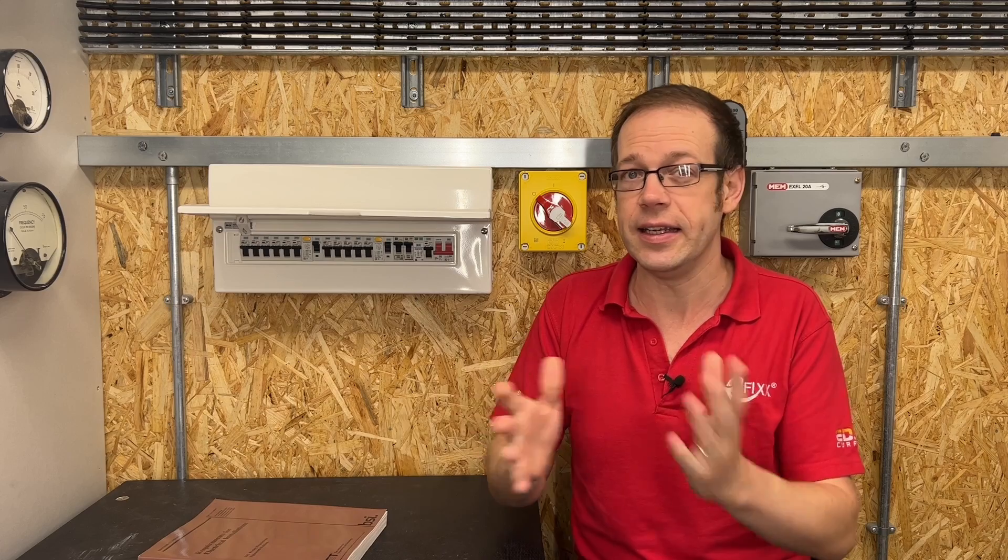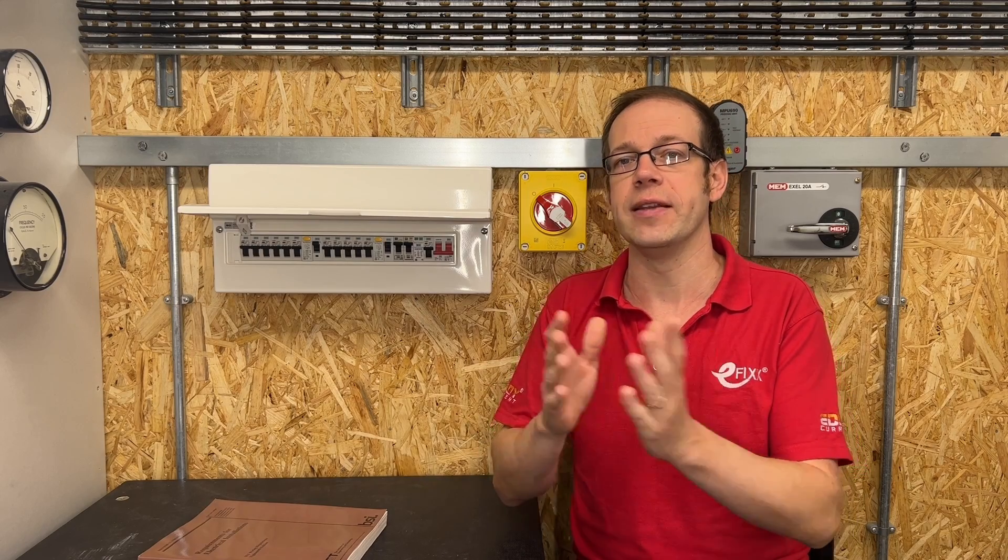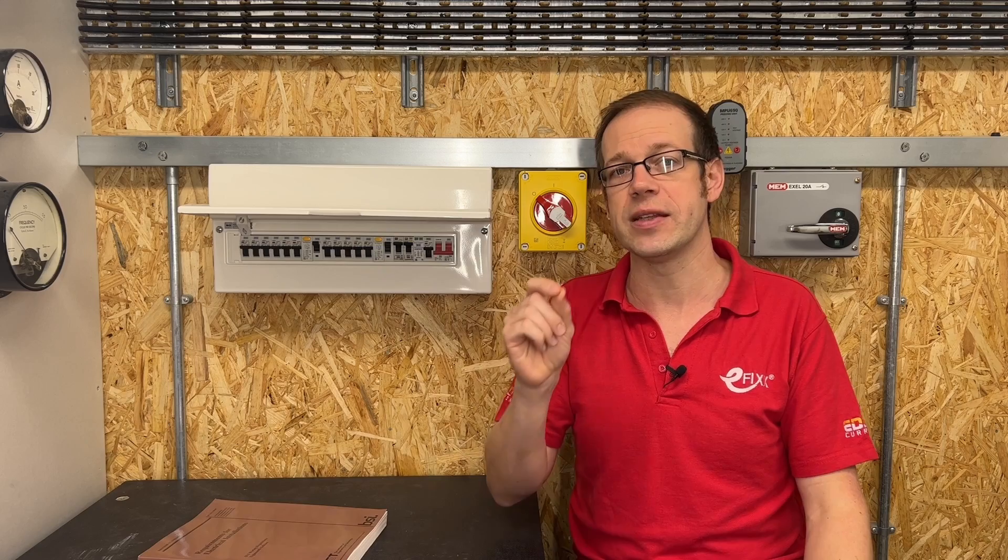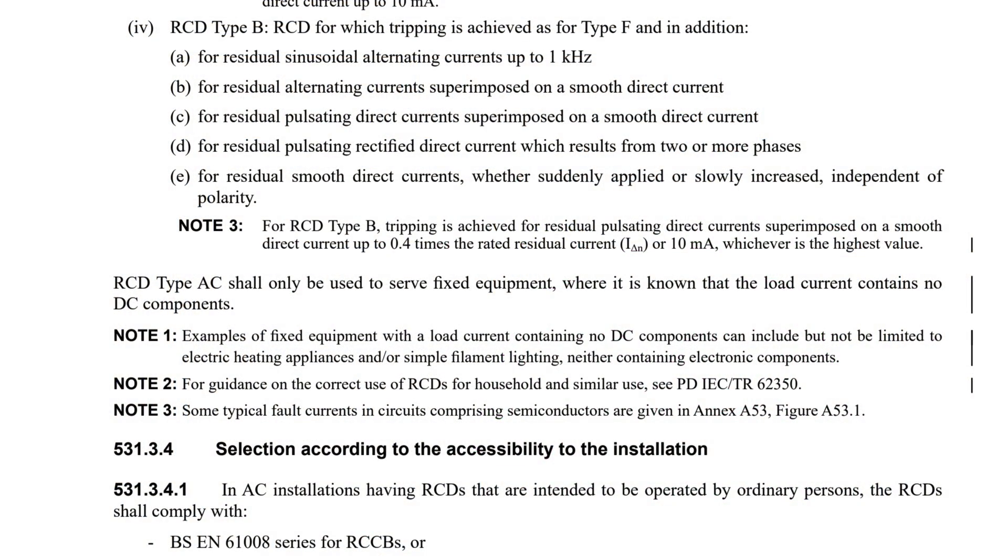So, it seems with all the DC leaky loads people are connecting to our electrical installations, the type AC RCD is a thing of the past, and it seems the Second Amendment is reinforcing this idea. After defining the different types of RCD, Regulation 531.3.3 states, RCD type AC shall only be used to serve fixed equipment, where it is known that the load current contains no DC components.